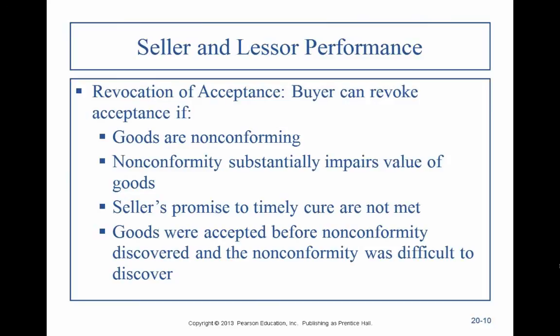When is there a legal basis for a buyer to say this is bad, I don't want to accept these goods? A buyer can revoke — take back their acceptance — when goods are non-conforming. If I accepted the dresses, I can't reject the whole shipment, but I can reject the ones that are non-conforming, meaning the blue one. The perfect tender rule no longer applies; the non-conformity has to substantially impair the value of the goods. If I got 99 that were blue, we have a big problem — I'm not going to sell as many blue dresses in preparation for Valentine's Day.